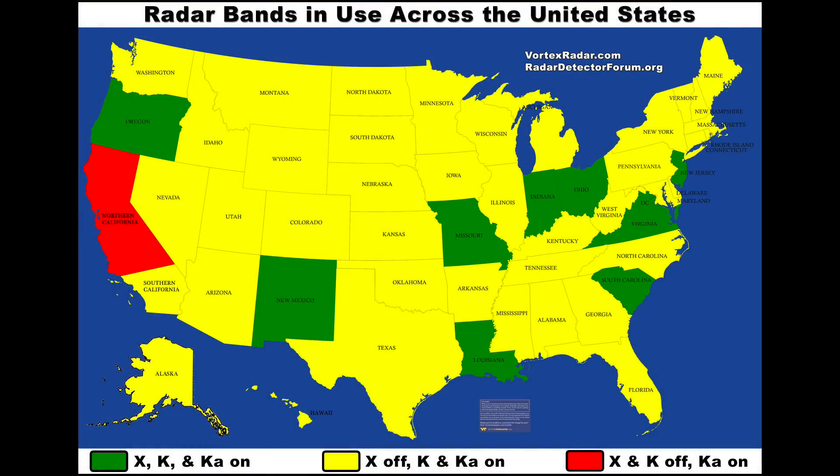Taking a look at this map, you're going to get useful information about what bands are in use everywhere you drive, where you can safely turn on and off different bands, and even get information to help you determine which radar detector you should buy. If you have a lot of K band in use where you're driving, you're going to want something with good blind spot filtering, and especially if you're in the city, GPS lockouts and low speed muting — so you'll want a detector with a GPS chip, like the DFR7, the MAX, or the MAX 360. Or if you have a detector like the Redline or the V1 that doesn't have a GPS chip built in, you may want to pair it with your phone and use your phone's GPS and an app to get the GPS lockouts and additional filtering you want on K band.